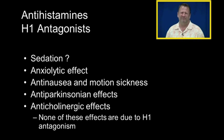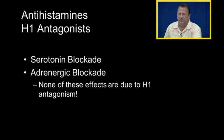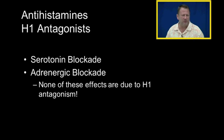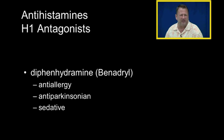Peripheral H1 antagonism — blocking the H1 receptor out in the body — is how antihistamines achieve their anti-histamine effects. Antihistamines can also affect serotonin receptors and adrenergic receptors, which have nothing to do with H1 antagonism. Diphenhydramine is our prototypical antihistamine: it has anti-allergy properties due to H1 antagonism, and anti-Parkinsonian effects due to its anti-cholinergic, anti-muscarinic properties.